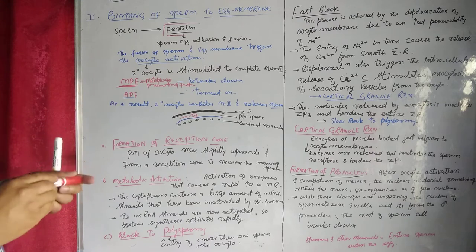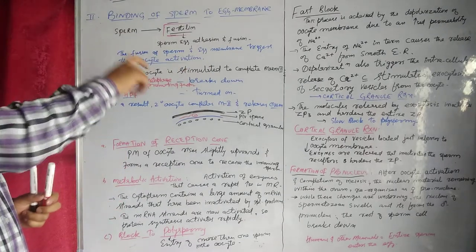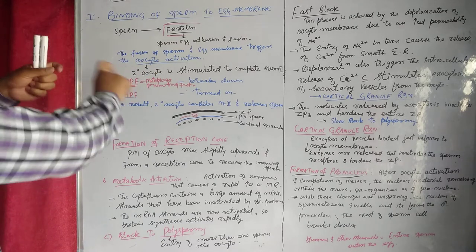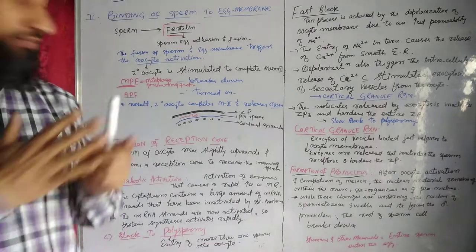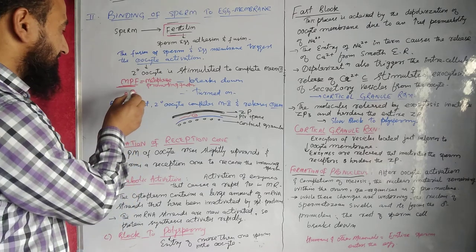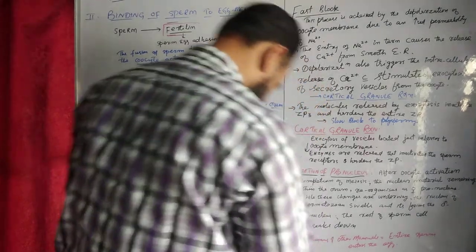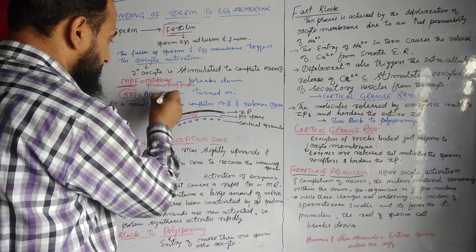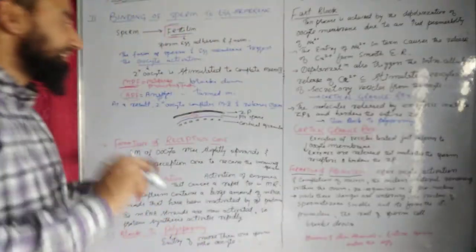During egg activation, because of the binding of sperm to the egg membrane, what happens is: this MPF, the metaphase promoting factor, breaks down. It is like a switch. MPF breaks down, and APF — that is, anaphase promoting factor — is turned on.